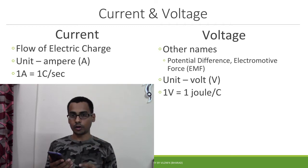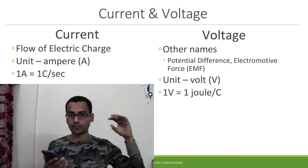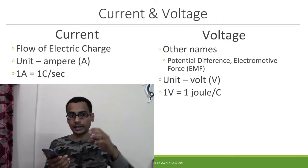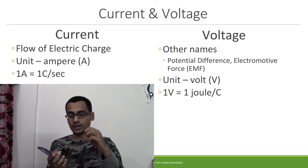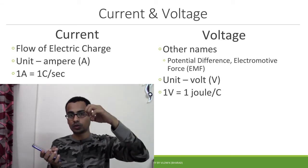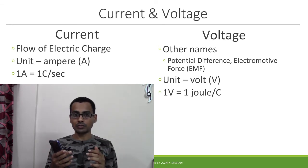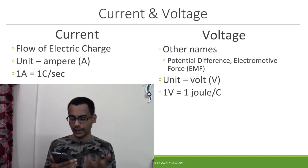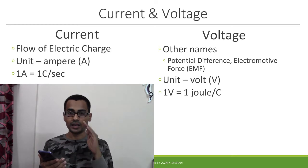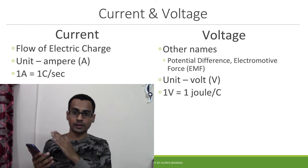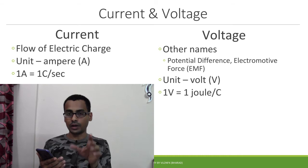This defines two key terms: current, which is the flow of electrons; and voltage, also known as potential difference or electromotive force, which is the pull between positive and negative charges — the force with which it pushes the electrons. The larger the charge accumulation on the two sides, the higher the potential difference. Current is measured in amperes: one ampere is when one coulomb of charge flows per second. Since the charge on an electron is just 1.6 × 10⁻¹⁹ coulomb, an enormous number of electrons must pass through an area to constitute one ampere of current.